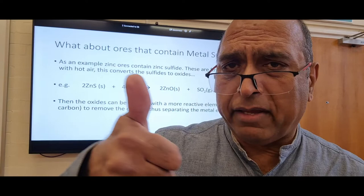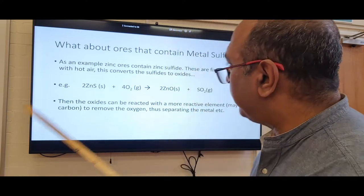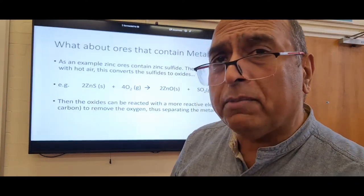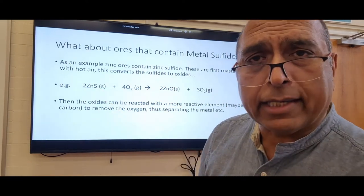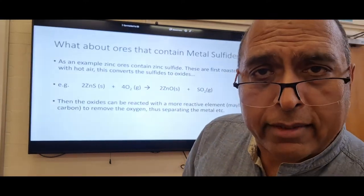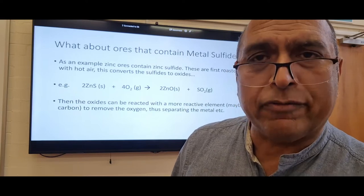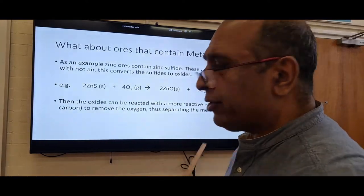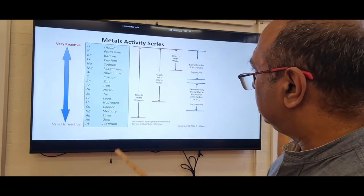Some metals occur as sulfides rather than oxides — for example zinc sulfide. The first step with sulfide ores is to roast them in air: the oxygen reacts with the sulfur making sulfur dioxide gas, converting the sulfide into an oxide. That oxide can then be reacted with carbon or a more reactive metal to extract the metal from its ore.